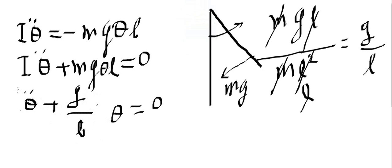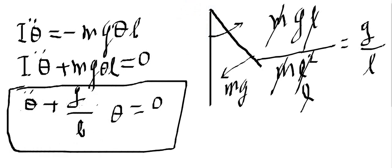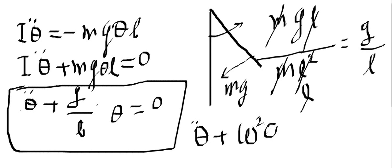We replace that with g by L, and we have a differential equation for theta. If this is a differential equation of simple harmonic motion, then we can say this quantity here must be omega squared. So we can write: theta double dot plus omega squared times theta equals zero.